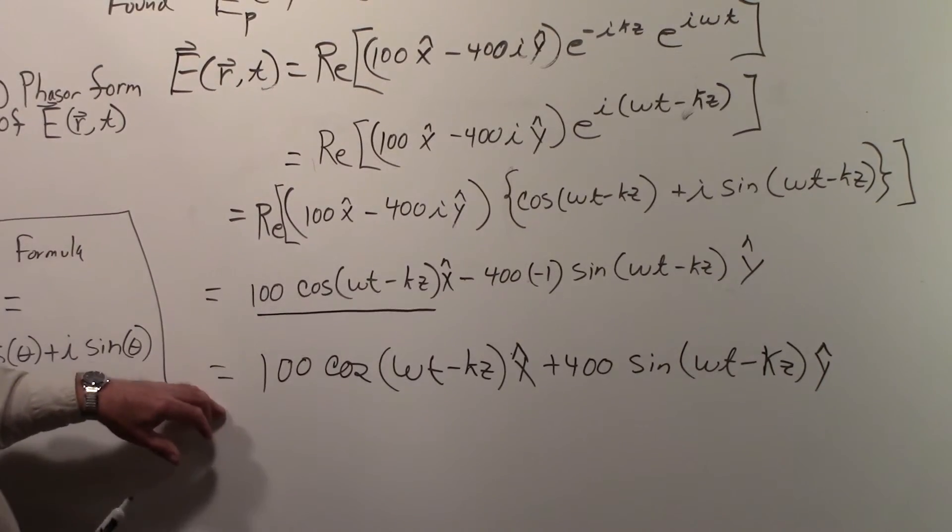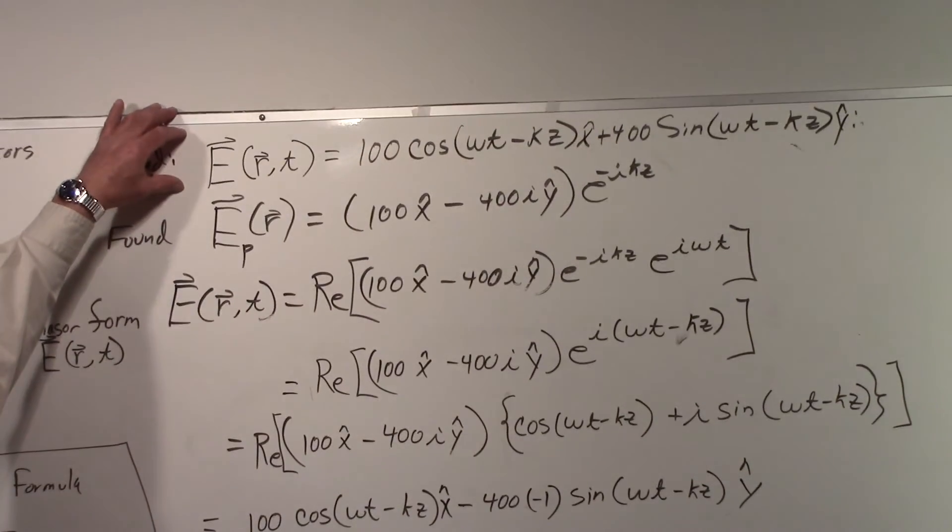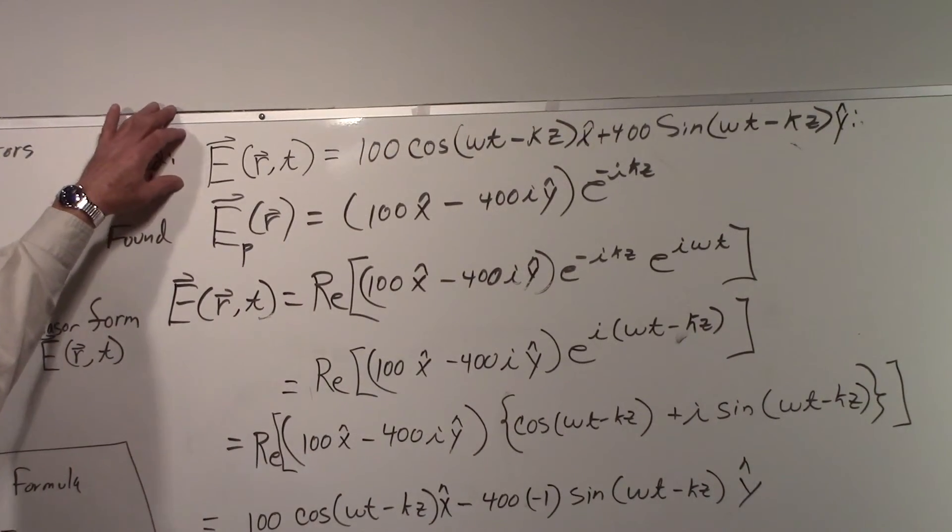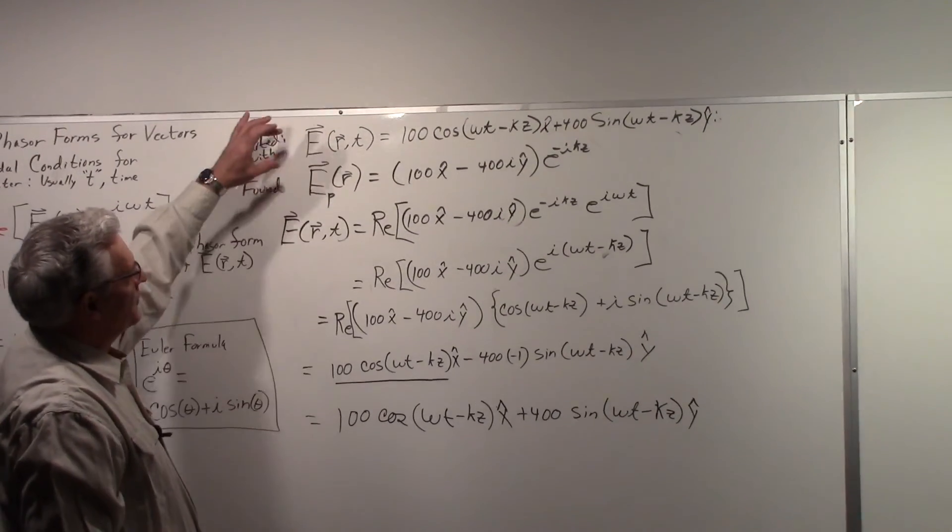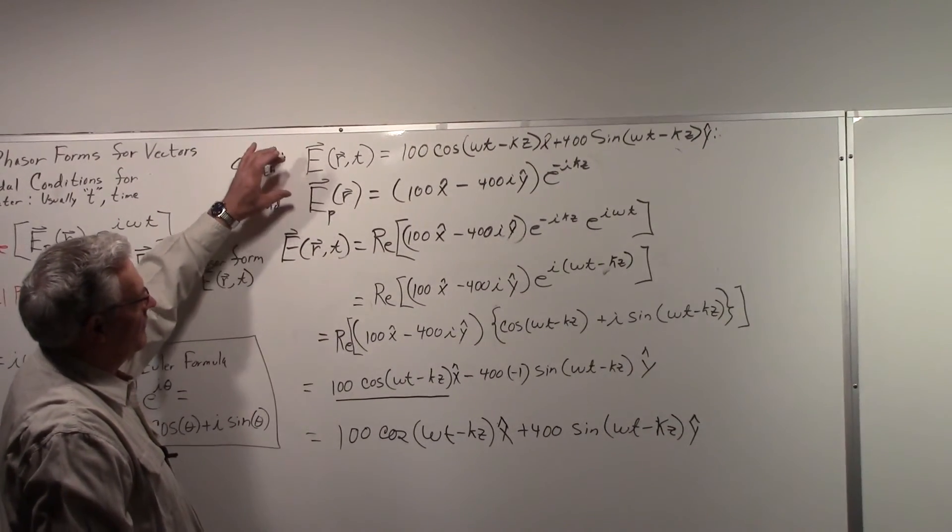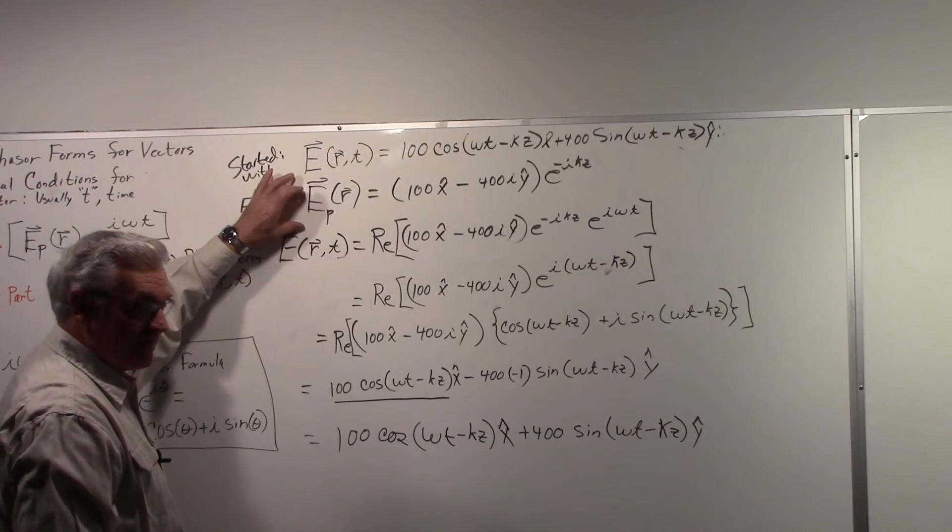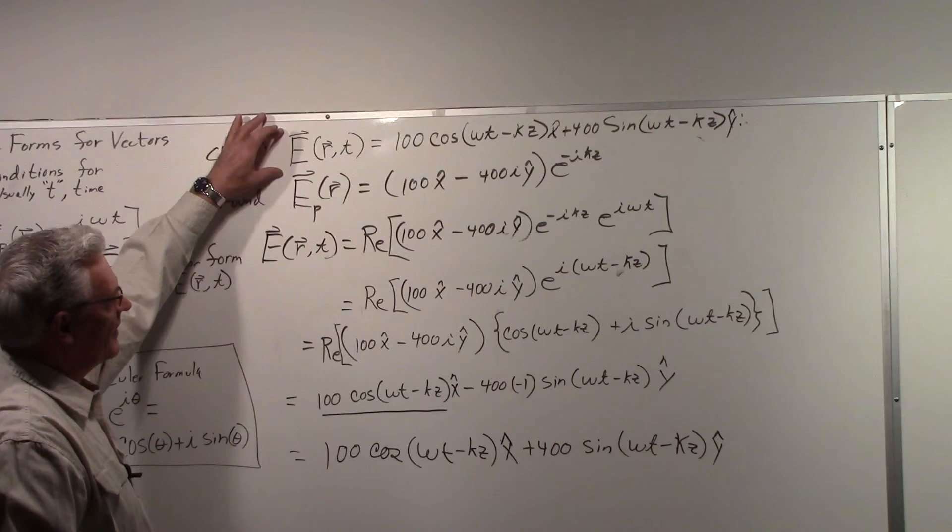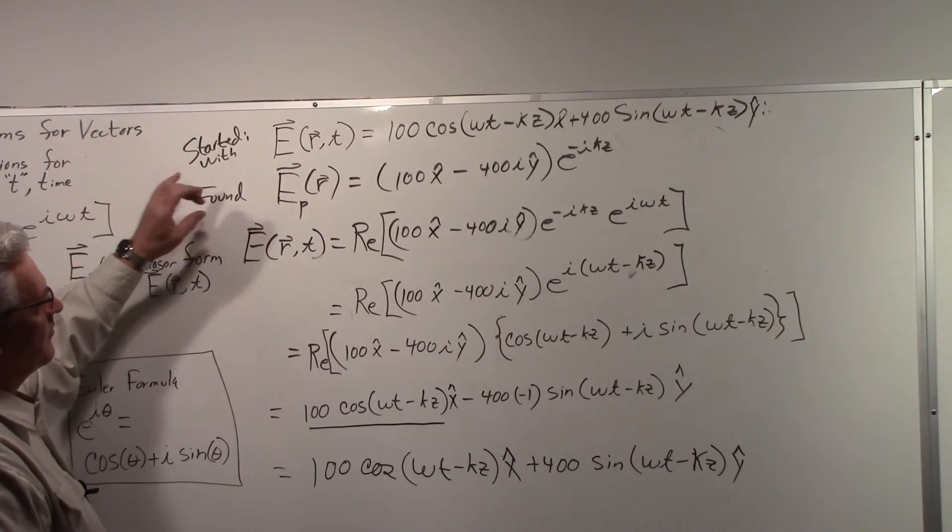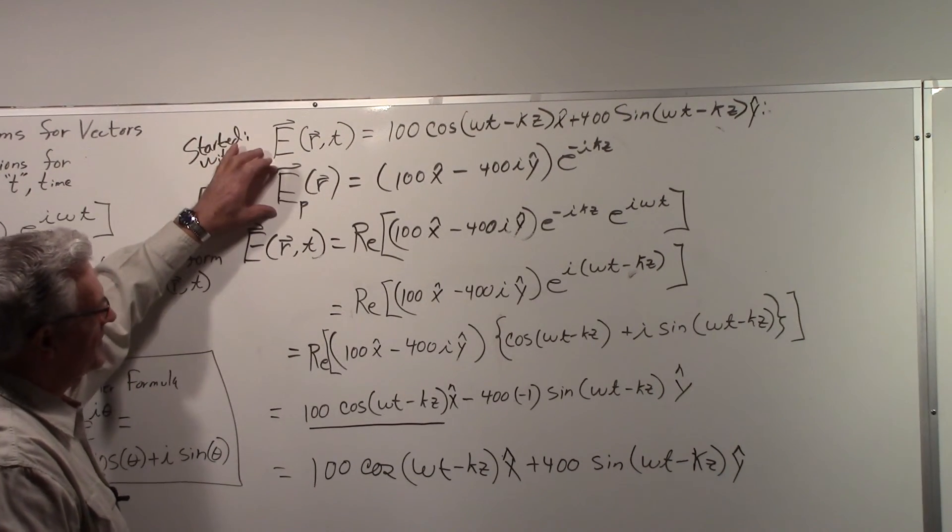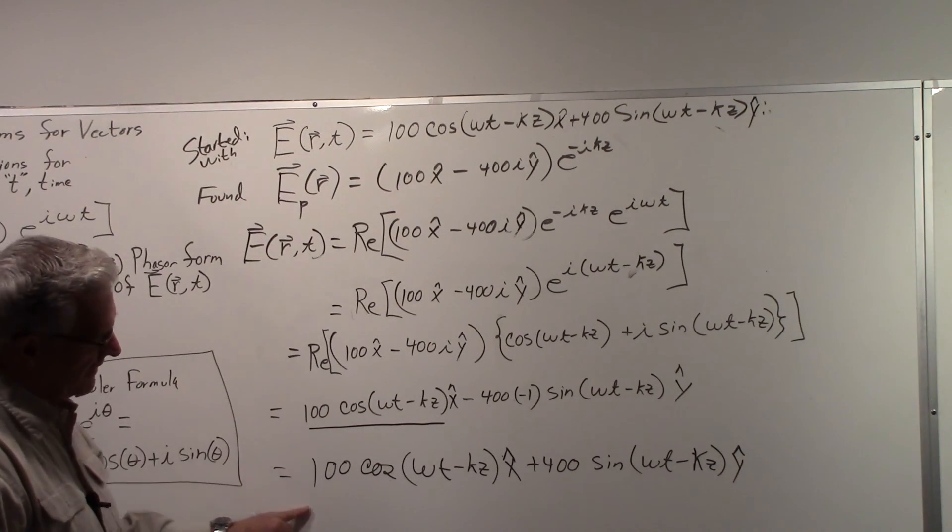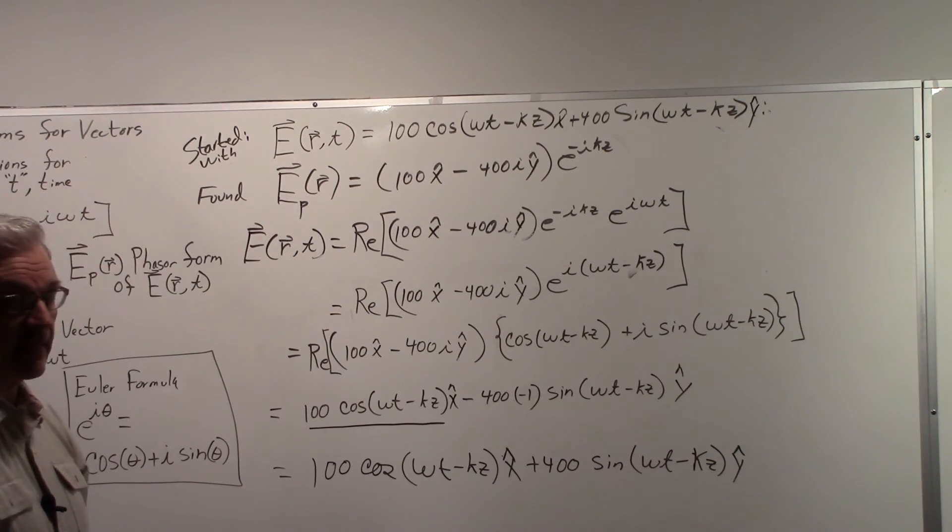So again, in Part 1 we started with this real vector and found the phasor form—the complex vector of that phase of the real vector. In this second part, we started with this to find the real vector, and we found it like that.